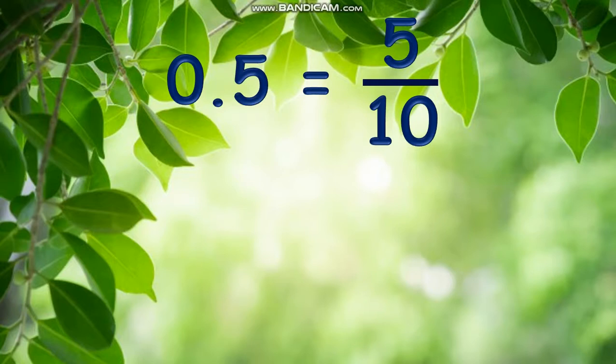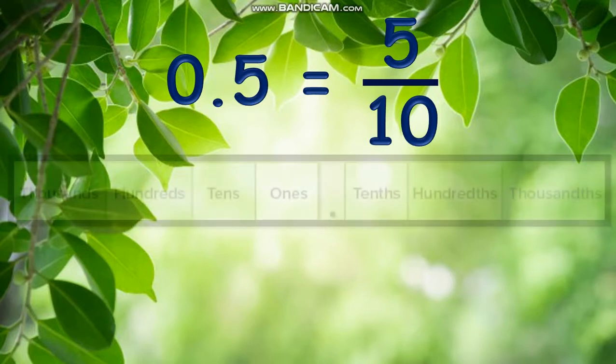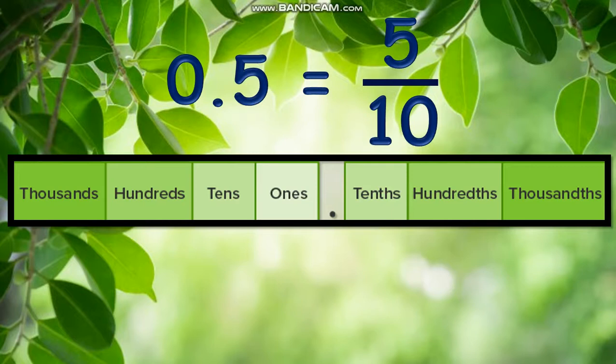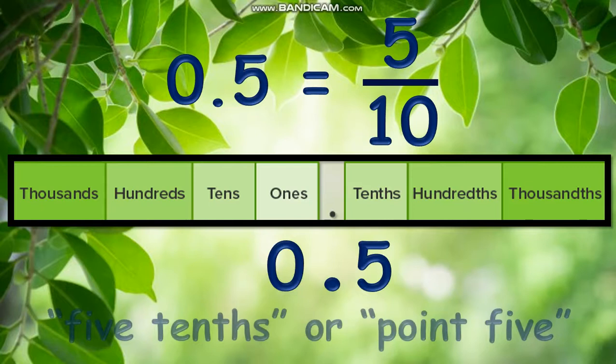Let us visualize 0.5 with the place value chart of our number system, which now includes the decimals. Since 5 tenths is our fraction, 5 is in the column of tenths place with the decimal point on its left, and next is the whole number 0. Therefore, we can now read this decimal as 5 tenths or point 5.